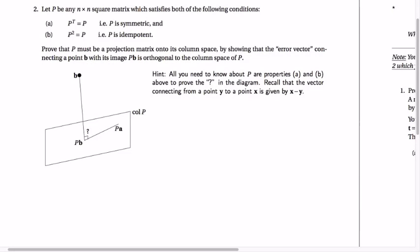All right, so on question two of homework one star, you're given a very sparing amount of information about a matrix, a square matrix P. It's square because it's n by n, right?